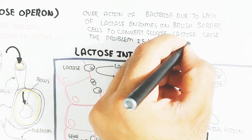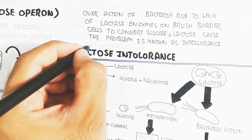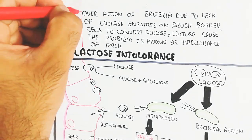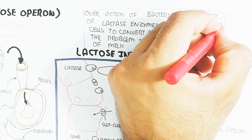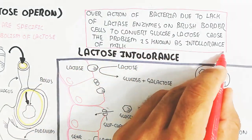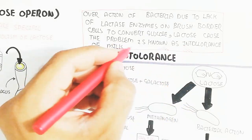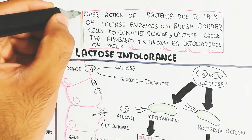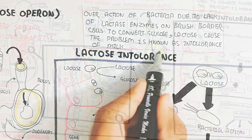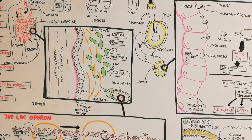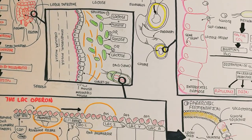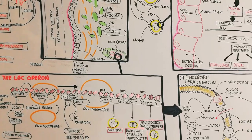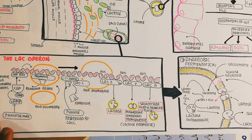In this video we discussed the lac operon and lactose intolerance. The lac operon functions for lactose metabolism in bacteria, but when lactase enzyme is absent from our own digestive system, excessive bacterial activity produces lactic acid, hydrogen gas, and carbon dioxide, leading to problems in the digestive system. Thanks for watching.